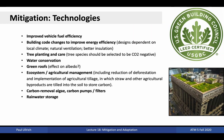Other technologies useful in mitigating the effect of greenhouse gas emissions include improved vehicle fuel efficiency, building code changes to improve energy efficiency, tree planting and care — noting that tree species need to be selected to be carbon negative — water conservation, green roofs, ecosystem and agricultural management, including reduction of deforestation and implementation of agricultural tillage, in which straw and other agricultural byproducts are tilled into the soil to store carbon, carbon removal algae, carbon pumps and filters, and rainwater storage. Many of these efforts are targeted at reducing energy demand, which in turn reduces our dependency on fossil fuels for electricity generation.